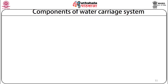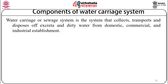Having discussed the properties of sewage and why sewage disposal is important in the context of public health, we will now proceed to the second part: components of the water carriage system. The water carriage or sewage system is the system that collects, transports and disposes of excreta and dirty water from domestic, commercial and industrial establishments.